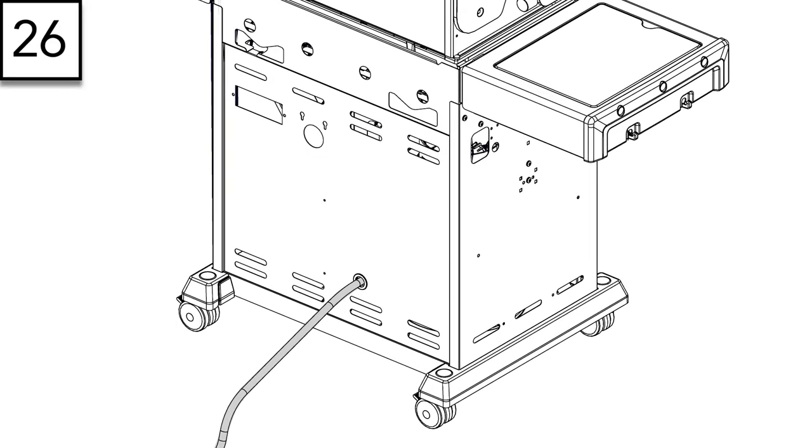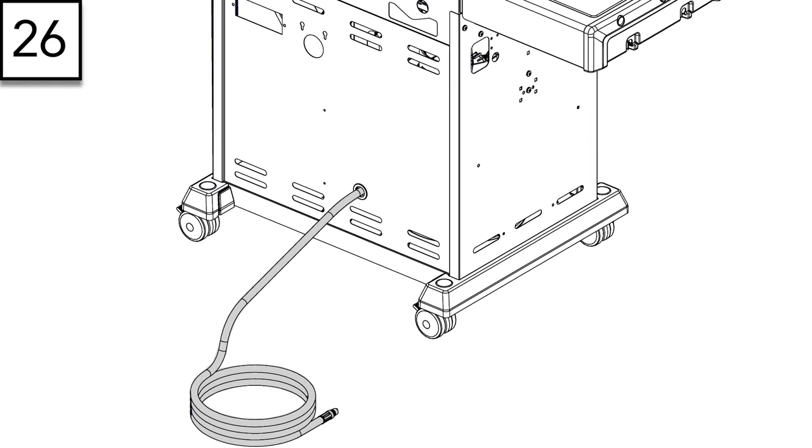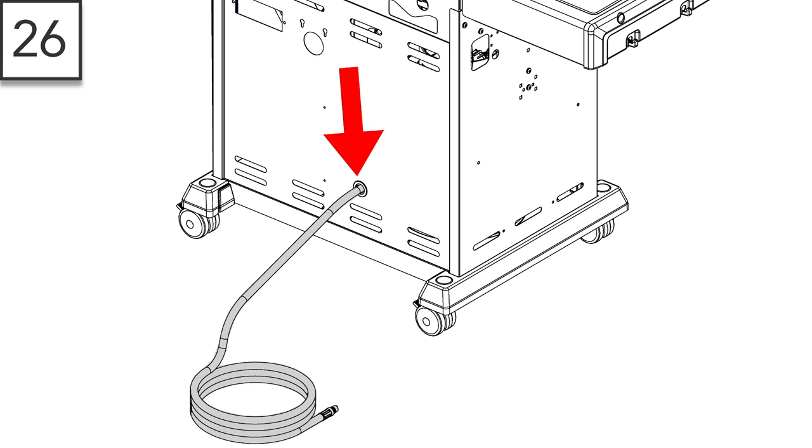If you have a natural gas grill, pull the hose through the back of the left circular opening on the side panel.